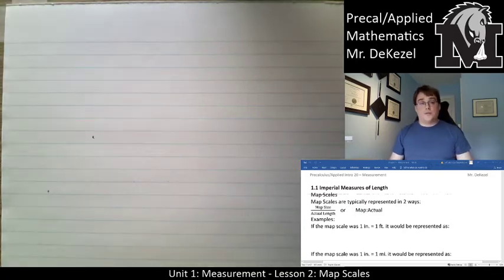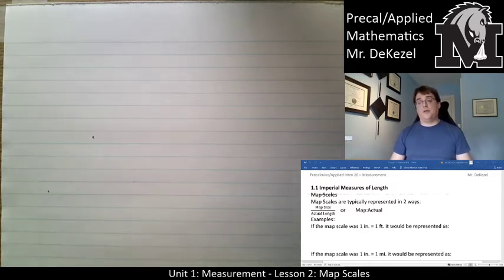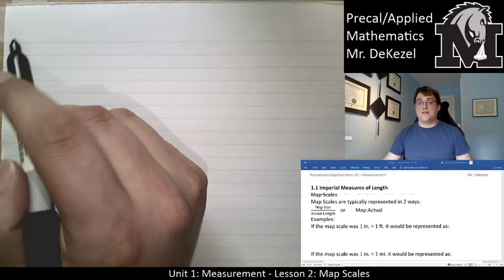Hello everyone, welcome to lesson two of pre-cal and applied math at Morris. This is about map scales, so this one is going to be quite a bit shorter than the last one. There's only a couple of pages, you can see 11 and 12 in your booklet. Let's jump right into it. It is 1.1, the second half of it. We can call it lesson two: map scales.